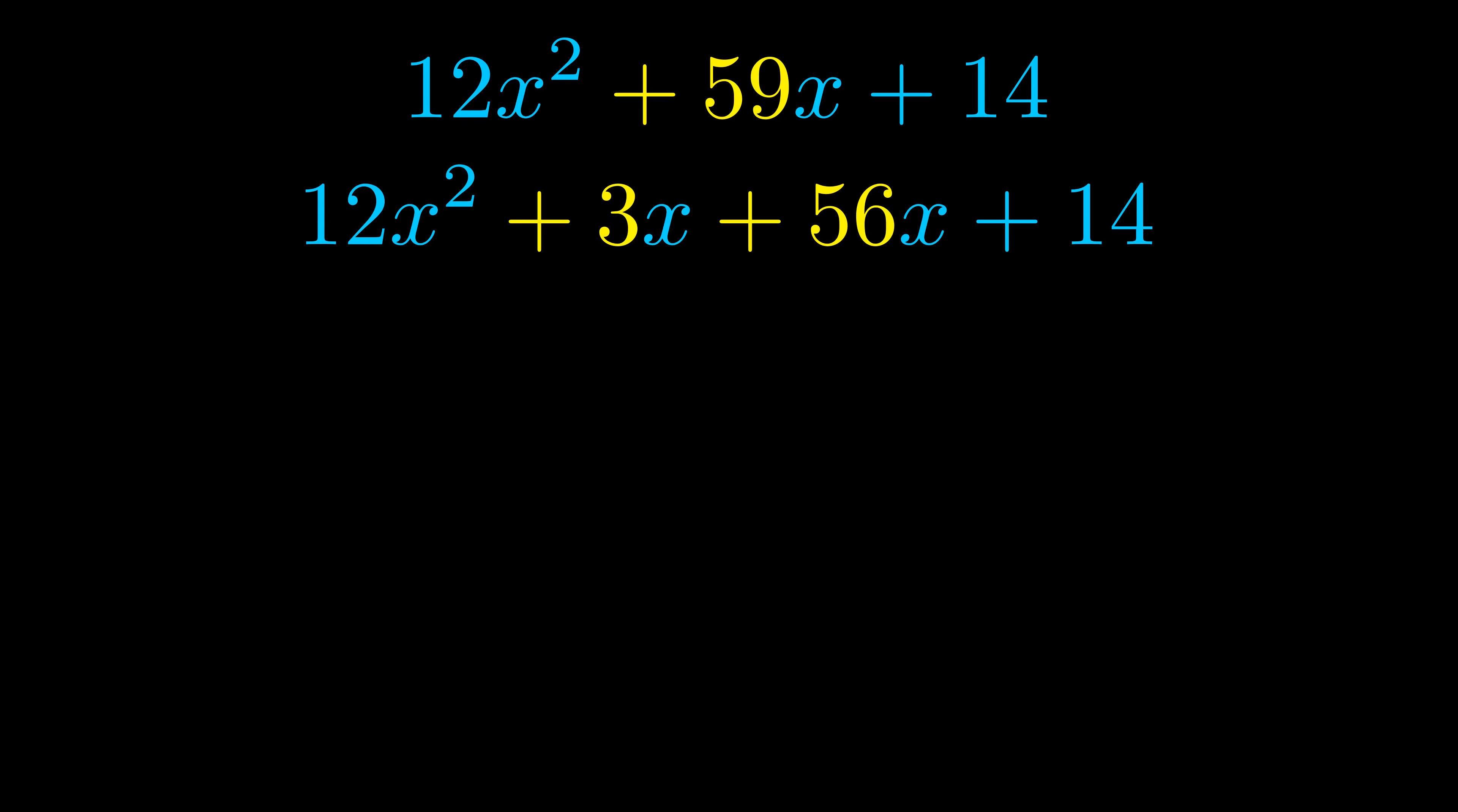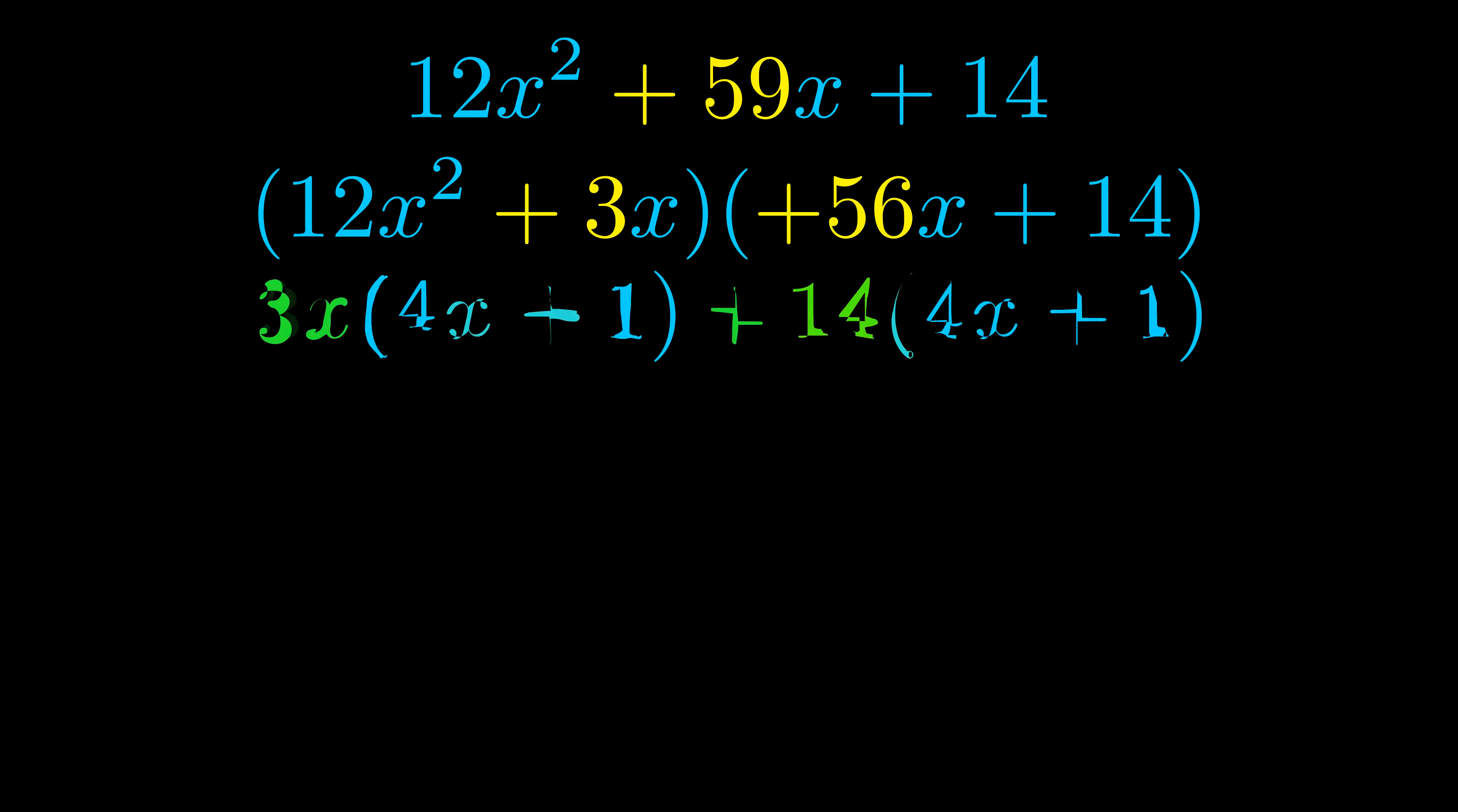Once we've done this, we put parentheses around the first term and the last term so that we can take the greatest common factor out of both terms. We can see the greatest common factor is now outside in green. Notice also how what remains inside the parentheses is the same in both cases.